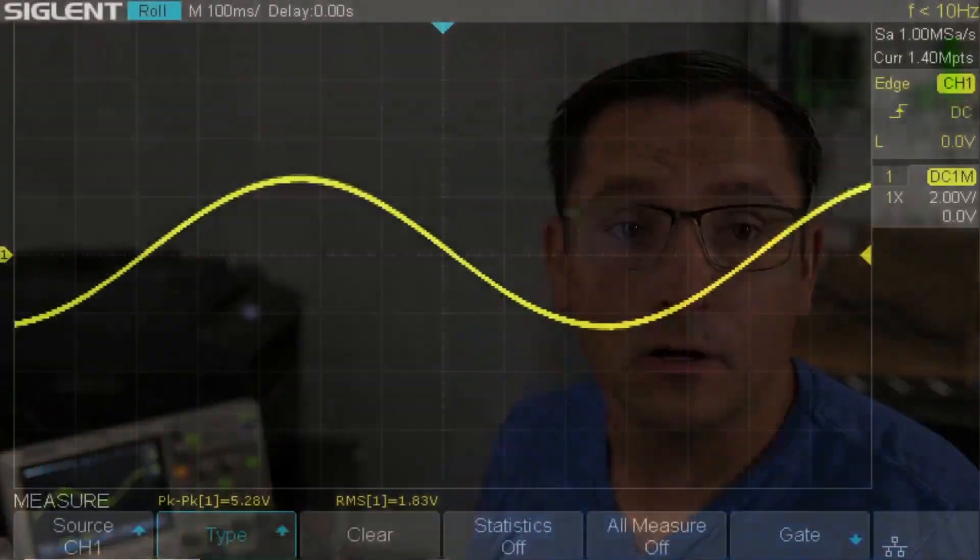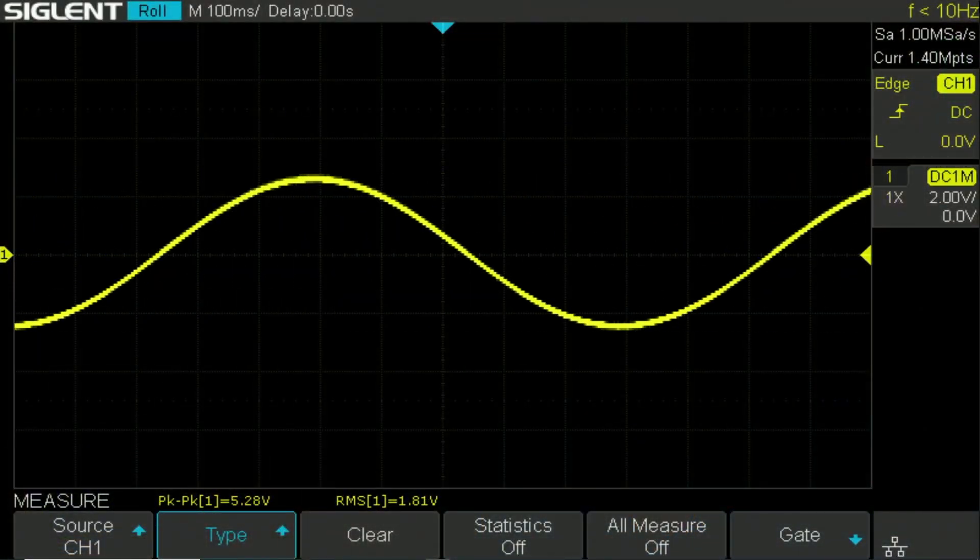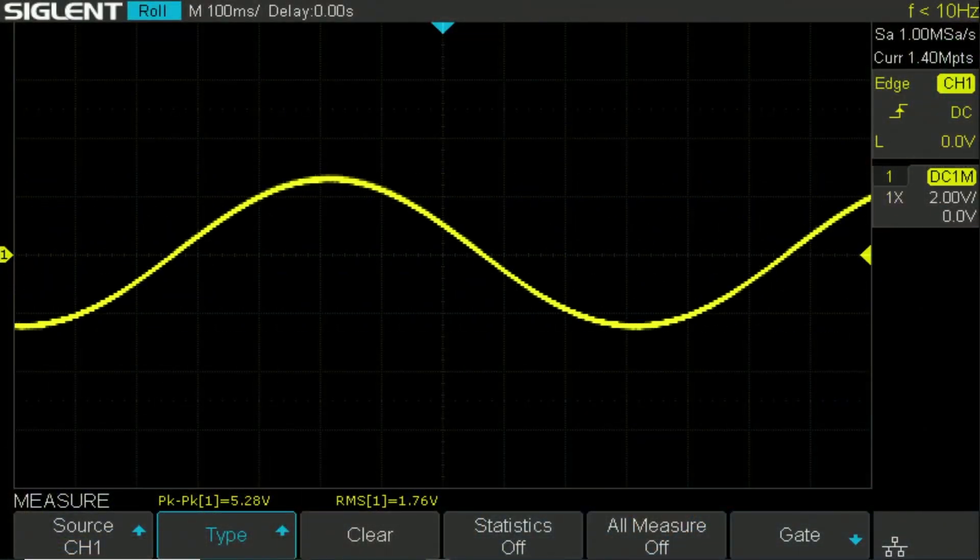As this current flow is changing, you're going to actually see a sine wave. This here is a sine wave on roll mode. Before we get too involved here, I want to show you the setup that I'm using.